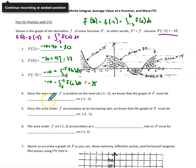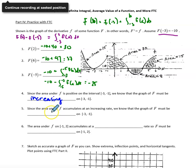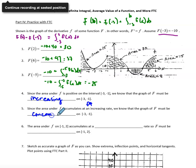Since the area under little f is positive on the interval from negative 3 to negative 1, we know that big F must be increasing. Where little f is positive — where the derivative is above the x-axis — the function must be increasing. If the area under little f accumulates at an increasing rate, that means little f is increasing, which means big F must be concave up on the interval from negative 3 to negative 1.